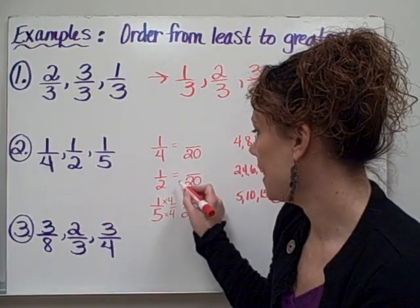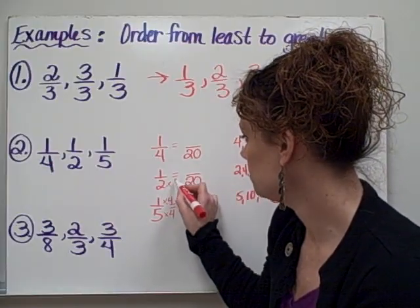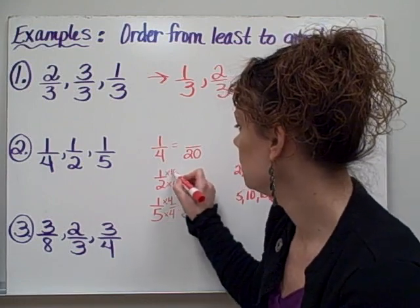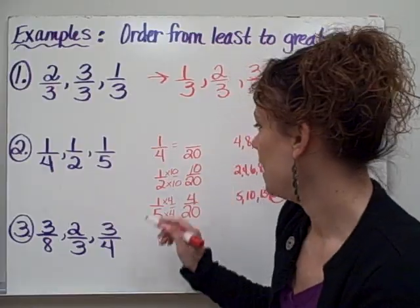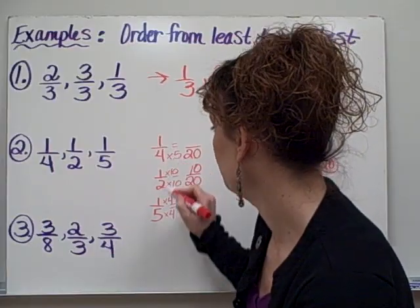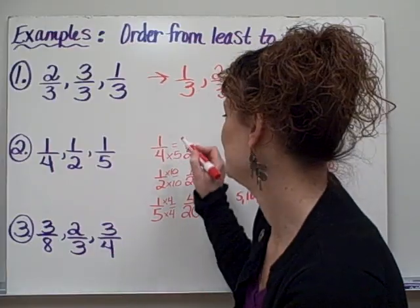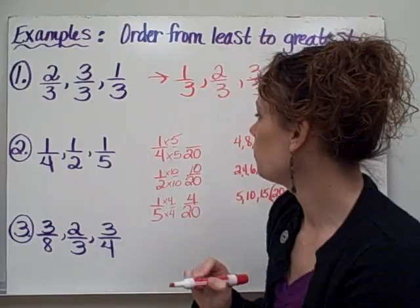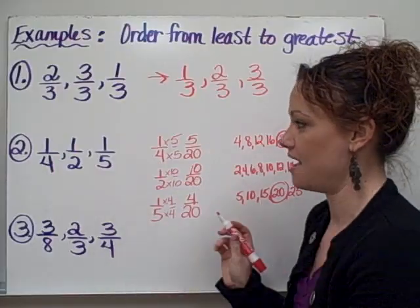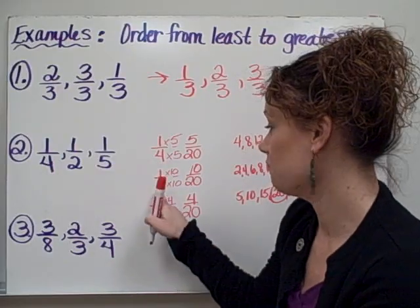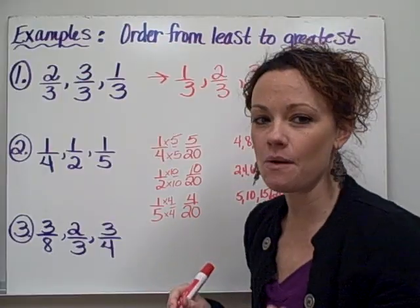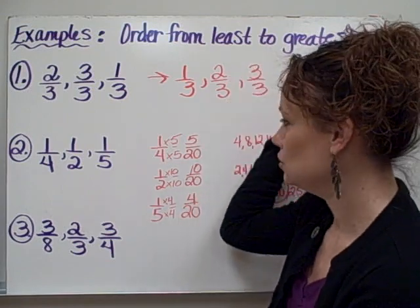Same thing over here. I ask myself, how do I get from 2 to 20? I multiply by 10. Whatever I do to the bottom, I must do to the top. So 1 times 10 equals 10. And finally, how do I get from 4 to 20? I multiply by 5. Whatever I do to the bottom, I must do to the top. 1 times 5 equals 5. So now instead of 1/4, I have 5/20. Instead of 1/2, I have 10/20. And instead of 1/5, I have 4/20. Now I'm able to order those numbers from least to greatest.